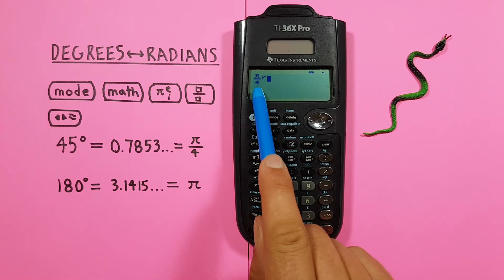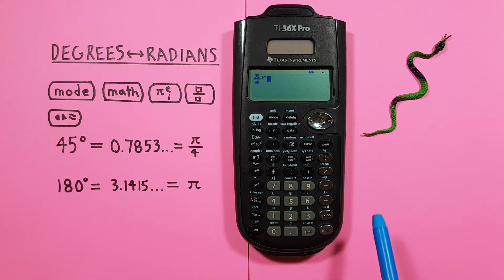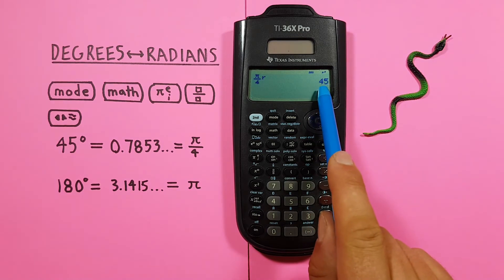There we go. PI over 4 radians. Now if we press Enter. We see we get the result of 45 degrees.